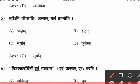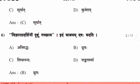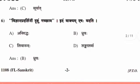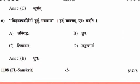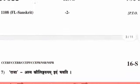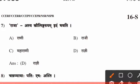Fifth question, the right answer is option C. Sixth question, the right answer is option B. Seventh question, the right answer is option D.